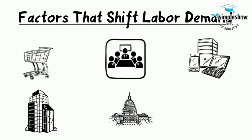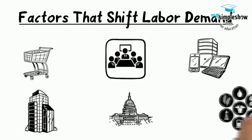5. Government regulations: complying with government regulations can increase or decrease the demand for labor at any given wage. 6. Price and availability of other inputs: if prices of other inputs fall, production will become more profitable and suppliers will demand more labor to increase production.